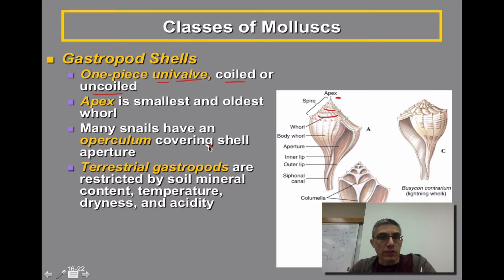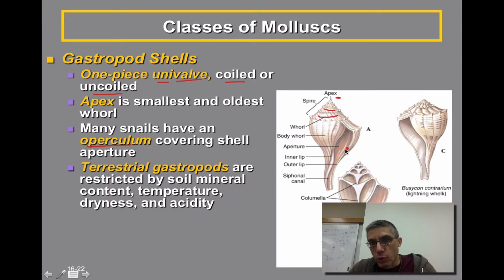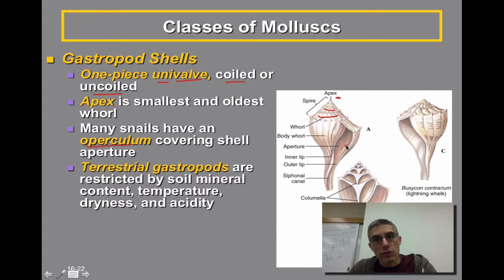There are many snails that actually have something called an operculum. An operculum is simply a covering for that shell. If this was a particular type of gastropod that has an operculum, there would be a little door or a little flap right about here. The animal can draw its soft body into the shell and then close this door, so it helps to protect the animal.